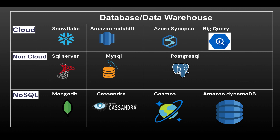When we talk about the skills for a data engineer, the very basic minimal skill to start with is databases or a data warehouse. I've segregated databases into three areas: cloud, non-cloud, and NoSQL. Right now everything is on cloud, so in 90% of job descriptions you'll find a requirement for a cloud database or a NoSQL database. There are many tools and technologies, but I'm focusing on the ones in high demand that will help you get a good job.